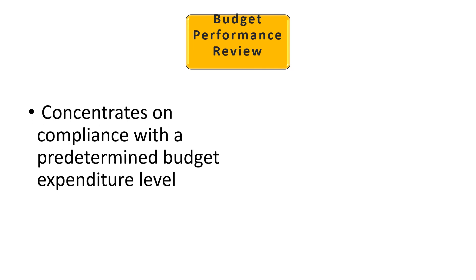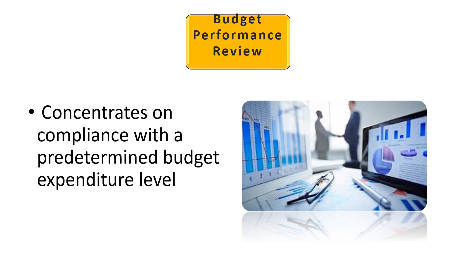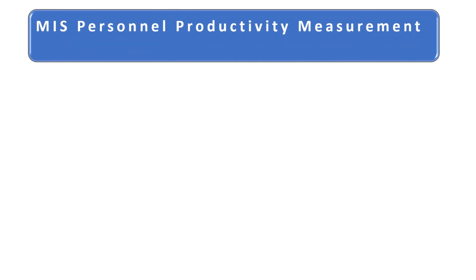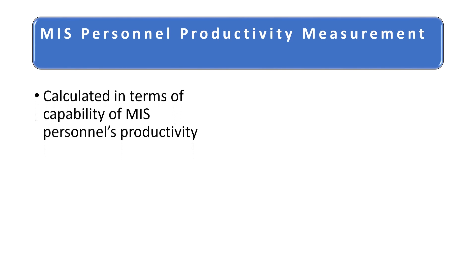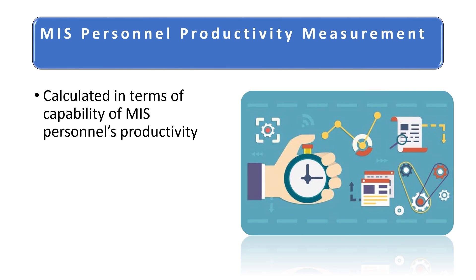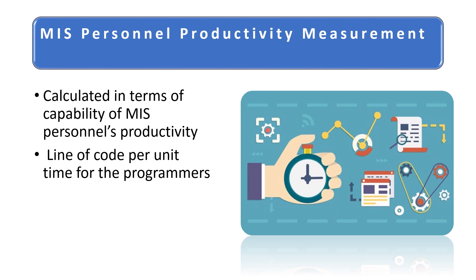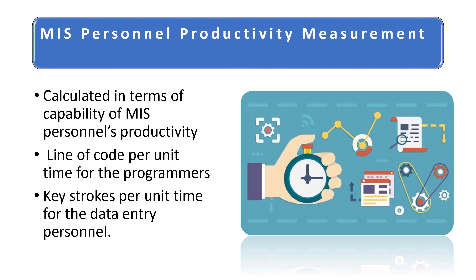Budget performance review concentrates on compliance with a predetermined budget expenditure level. MIS personnel productivity measurement is calculated in terms of the capability of management information system personnel's productivity, such as lines of code per unit time for programmers and keystrokes per unit time for data entry personnel.